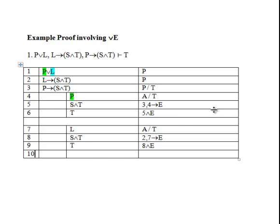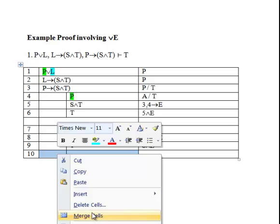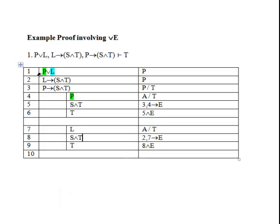So now if you take a look at the proof thus far, what we've done is assumed P at line 4, which is the left disjunct, and then we derived T. Then we assumed L, the right disjunct of the disjunction at line 1, and also derived T. So we derived the same proposition in both of the sub-proofs. Now given if P, T follows, and if L, T follows, then we can write T at line 10. And what we've done is shown that from the disjunction at line 1, and two sub-proofs, 4 through 6, and 7 through 9, that T follows. So this is the procedure for using disjunction elimination.